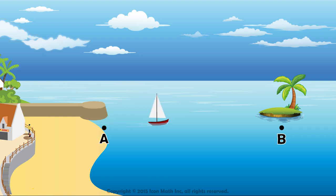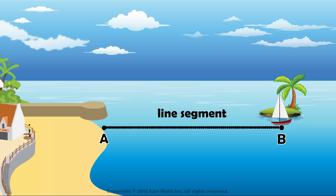If the boat starts sailing in a straight path towards the island, and we want to draw this path on the image, we can do that by filling as many points as we can between A and B. We call this resulting shape a line segment.